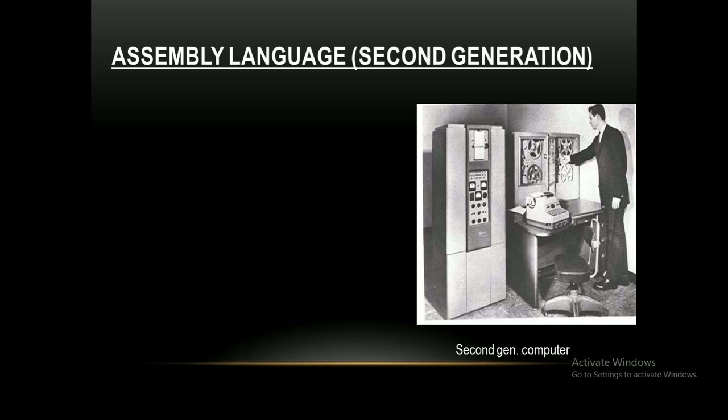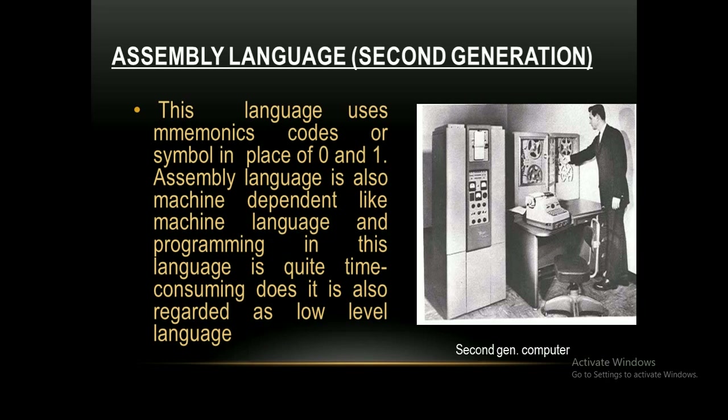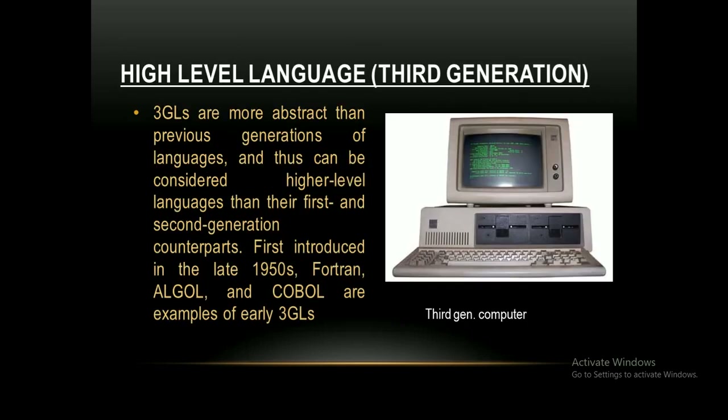Assembly language, or second-generation language, uses mnemonic codes or symbols in place of 0s and 1s. Assembly language is also machine-dependent like machine language, and programming in this language is quite time-consuming, so it is also regarded as a low-level language. Third-generation languages are more abstract than previous generations and can be considered higher-level languages. First introduced in the late 1950s, Fortran, ALGOL, and COBOL are examples of early third-generation languages.